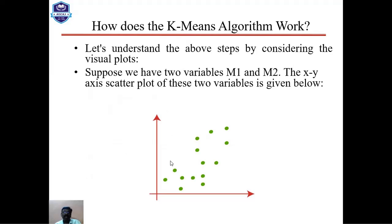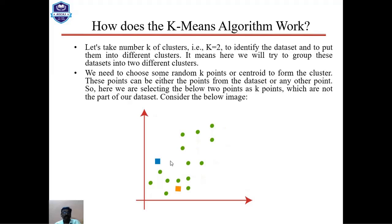Let us understand these steps with a visual example. Suppose we have two variables M1 and M2 on the X and Y axes. A scatter plot of these two variables is shown. We take the number of clusters K equal to two, to identify and group the dataset into two different clusters.